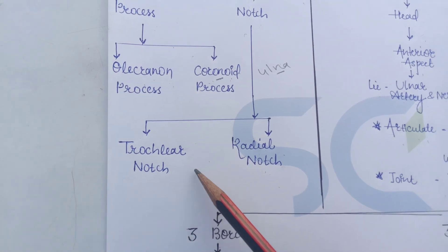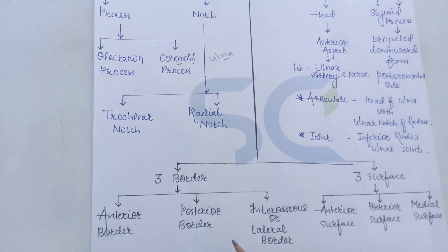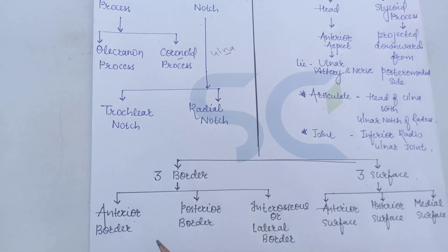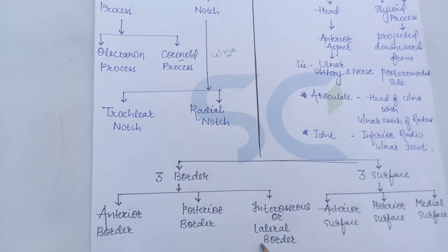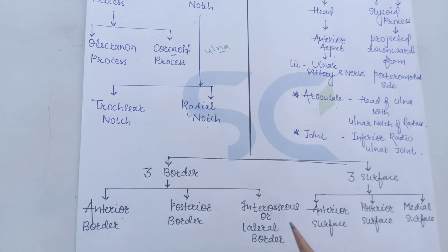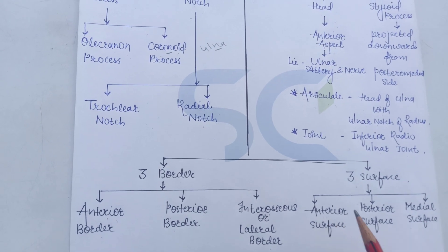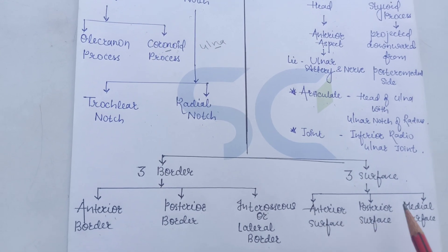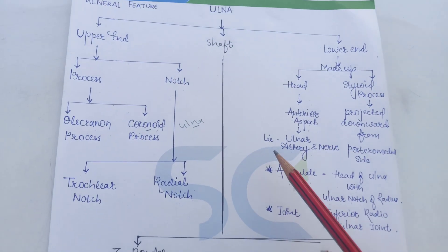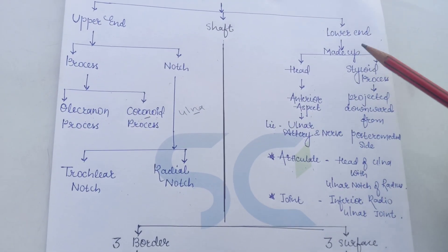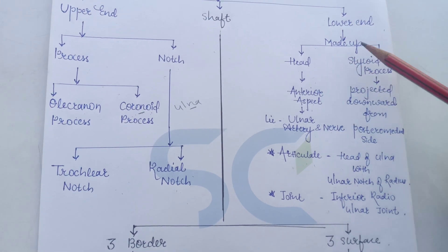The two notches are the trochlear notch and the radial notch. There are three borders: anterior, posterior, and the lateral or interosseous border. The three surfaces are the anterior, posterior, and the medial surface. The lower end of the ulna is made up of the head and the styloid process.